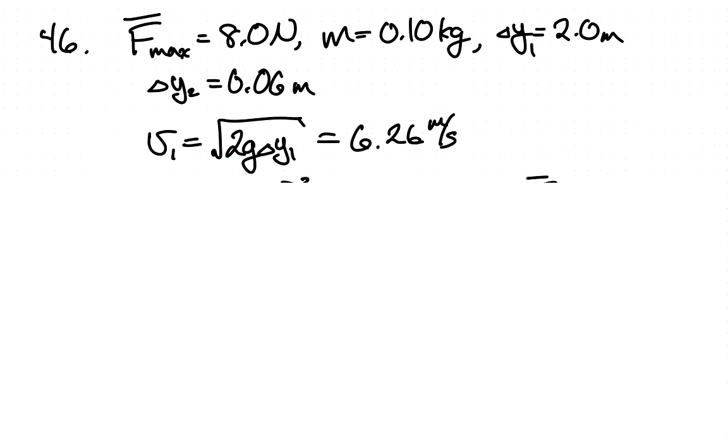Now, we can use this information along with the gravitational constant to figure out the velocity, and that is 6.26 meters per second it's traveling when it hits the ground.